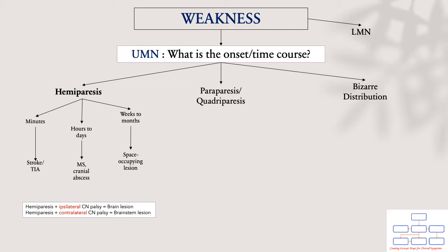If it's within weeks to months, you will need to consider malignancy. If there is something more sinister going on, look for cranial nerve involvement. If there is ipsilateral cranial nerve involvement to the weakness, the lesion lies in the brain. But if the cranial nerve involvement is contralateral to the site of the weakness, it is a brainstem lesion.